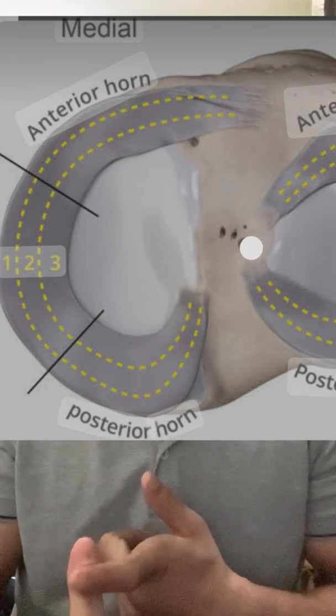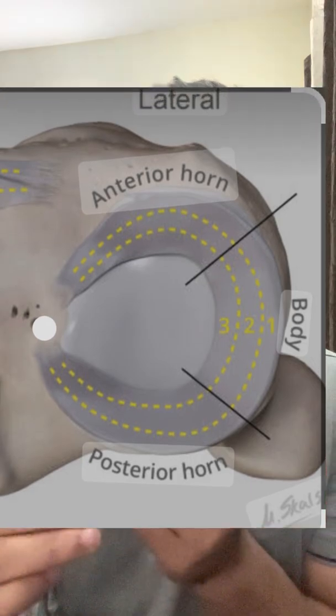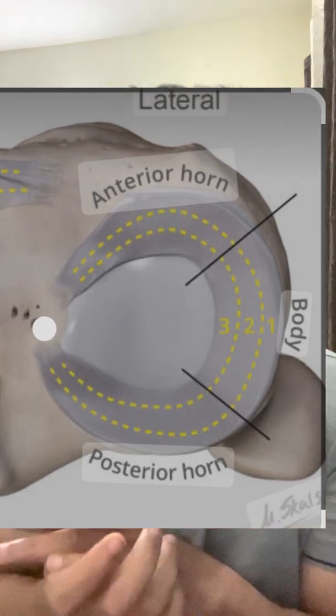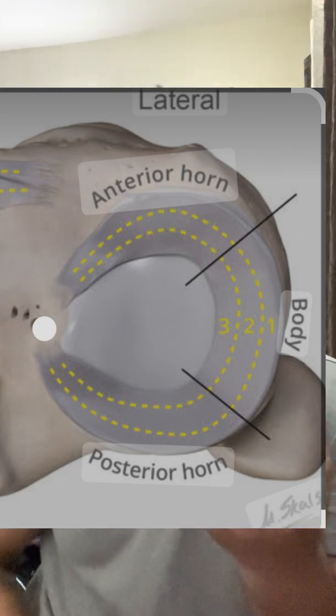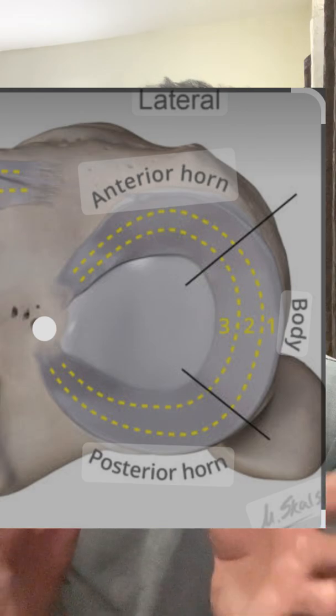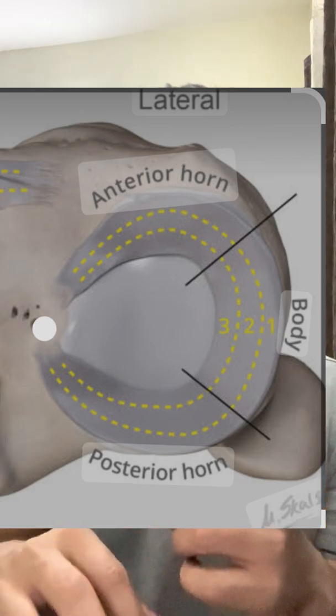The most common cyst is medially located — specifically posteromedial, because it occurs in the region of the posterior horn. In the lateral meniscus, the most common tears associated with cysts are the anterior horn tear and the middle third tear. The ratio of medial to lateral meniscal cysts is 2:1.